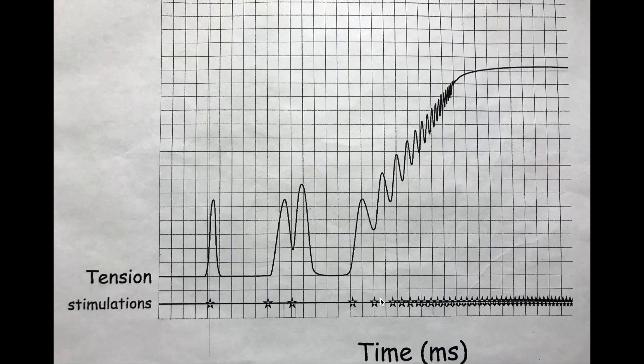The big thing I want you to note on this graph is that on the last one, we had voltage on the x-axis. On this one, though, we have time. So please make note — highlight that, draw an arrow to it — make sure you understand that on this graph, we are going to be focusing on time.